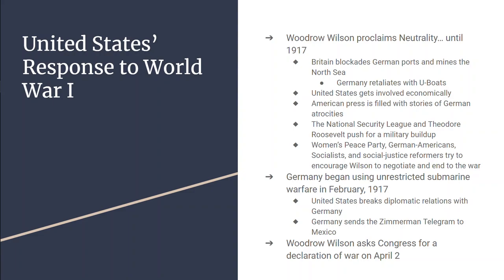Once Britain figured out what the telegram said, they passed the intercepted information to the U.S. government. And Woodrow Wilson is going to ask Congress to declare war on Germany, and it does that on April 2nd of 1917.